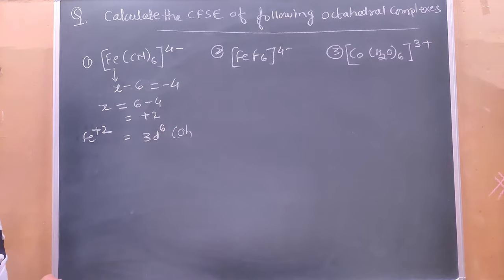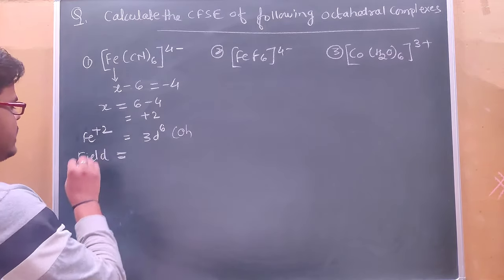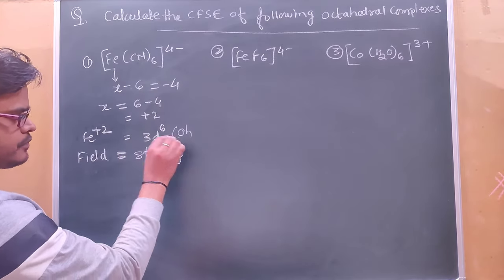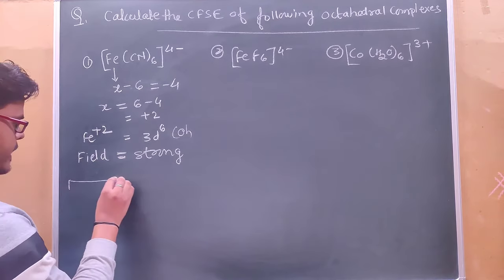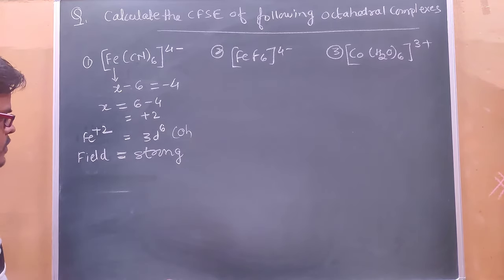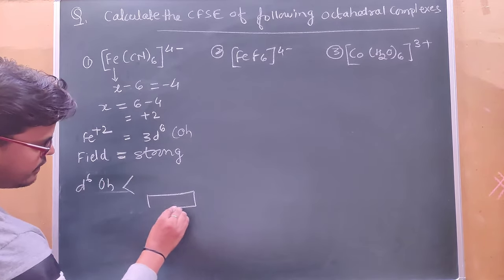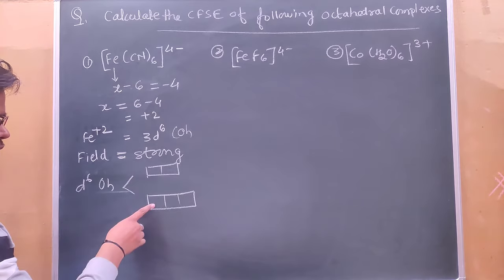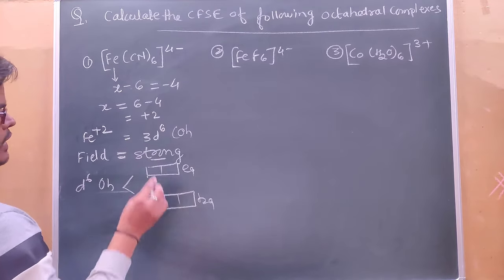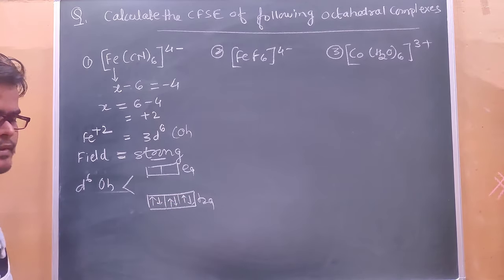अब फिल्ड को पहचानिए। यहां 3d metal है, +2 oxidation state है, cyanide strong ligand है, इसलिए field strong है। Strong field में electron कैसे भरा जाएगा? d6 octahedral complex में splitted levels हैं: नीचे t2g और ऊपर eg। Strong field में electron भरेंगे: 1, 2, 3, 4, 5, 6 — सारे t2g में, eg ऊपर खाली रहेगा।